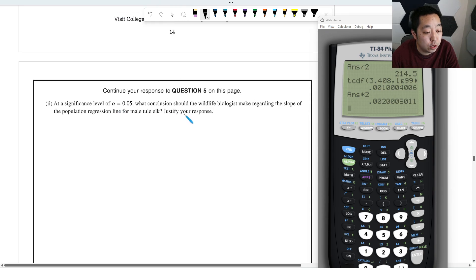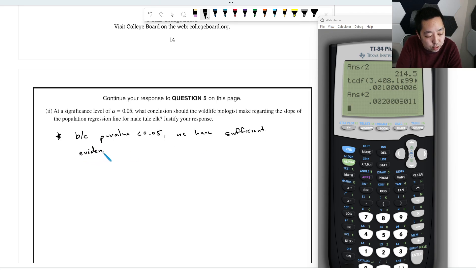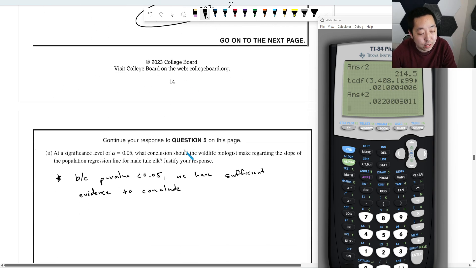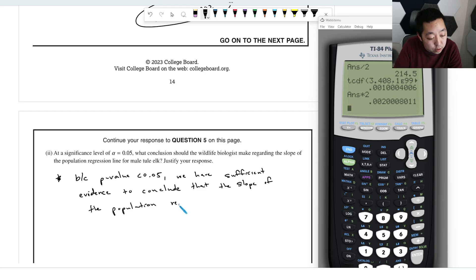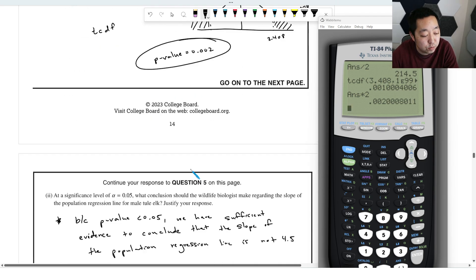And at a significance level of 0.05, what conclusion would the wildlife biologist make regarding the slope of the population regression line for the male tule elk? Justify your response. So you would say, because the p value is less than 0.05, we have sufficient evidence to reject the null hypothesis, but I'm not going to say reject the null, evidence to conclude. What is rejecting the null hypothesis in this case is that beta is not 4.5. Conclude that the slope of the population regression line is not 4.5. Okay, so we have enough evidence to say that it's not 4.5. That's all we conclude there. That's all we were asked to conclude or are running this test for.